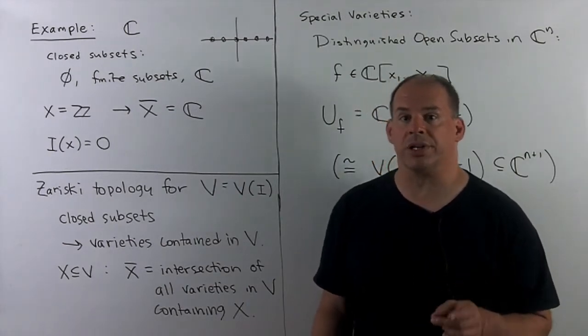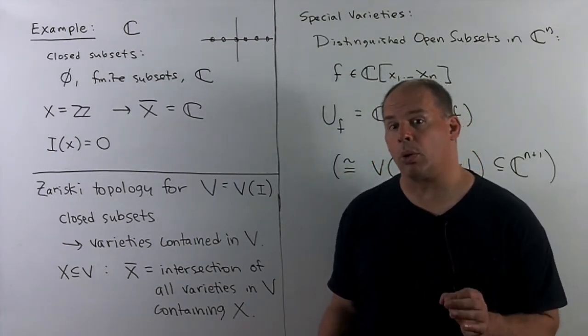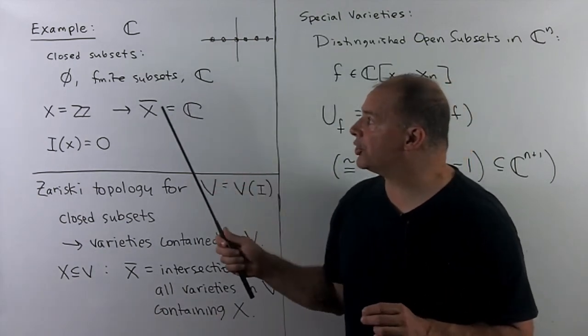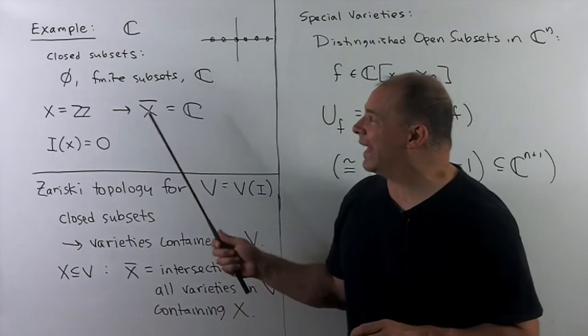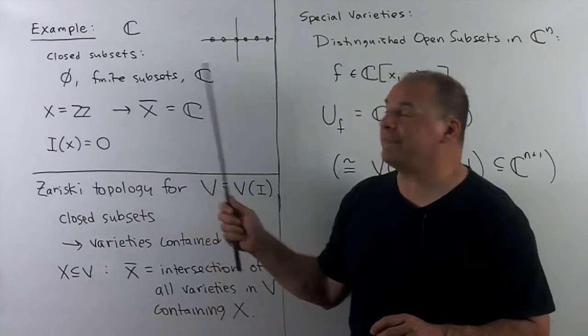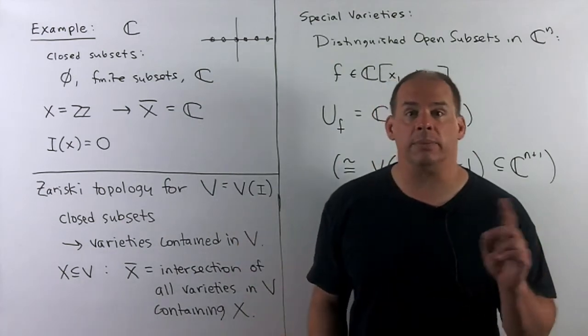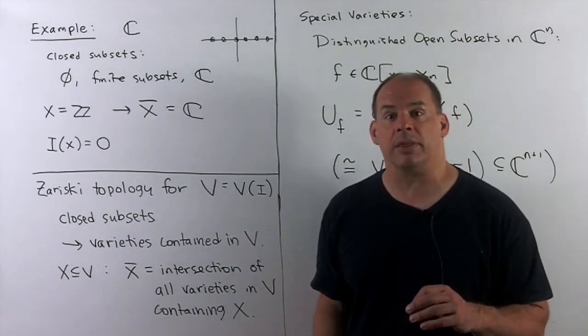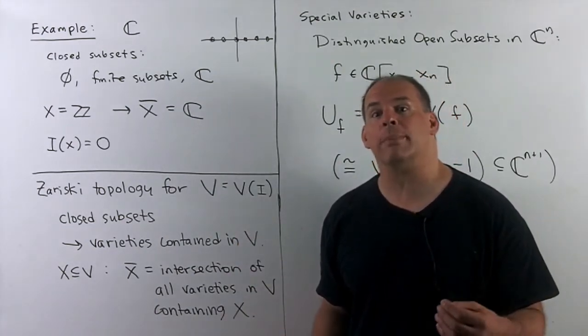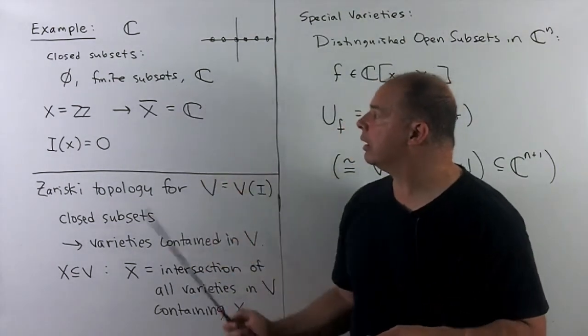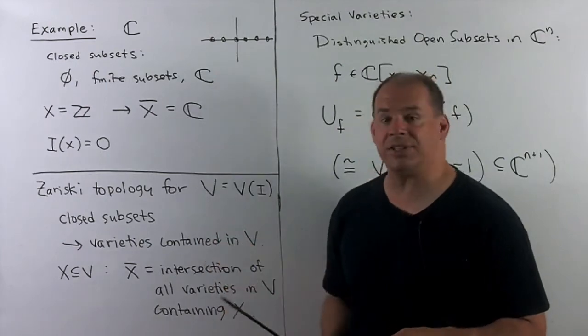Here's a basic example of Zariski closure. We'll see more when we get to torque varieties. So if we're in one dimension, where are the closed subsets? We have the empty set, we have any finite subsets of the plane, and we have the plane itself. So this means if we take any infinite subset of the plane, its Zariski closure must be the plane itself. So for instance, if we took the integers, Zariski closure, plane itself.